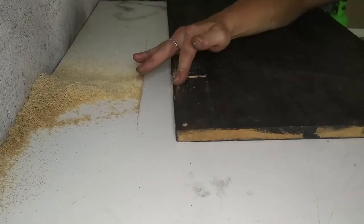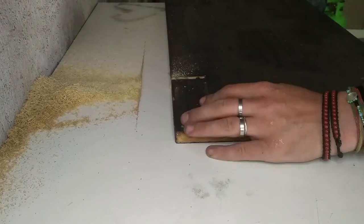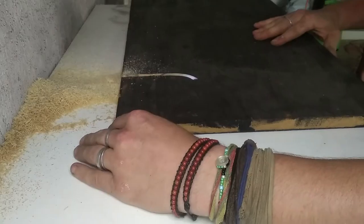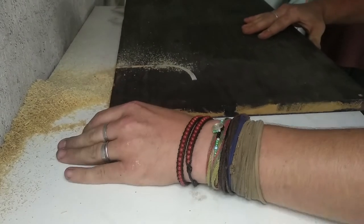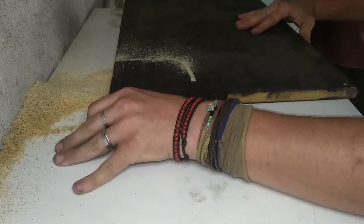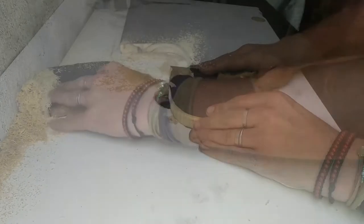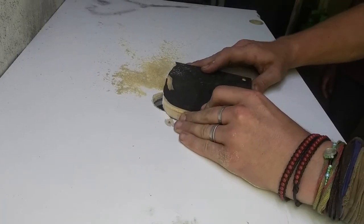Once we had marked our circles we just used a router to cut out a rough shape around the circle and then we used the router to clean up right up to the edges and try get it as smooth as possible.